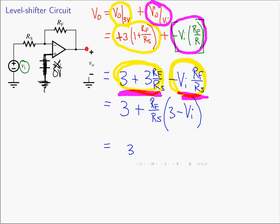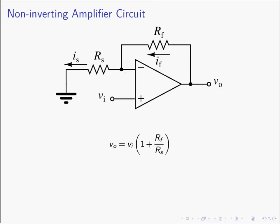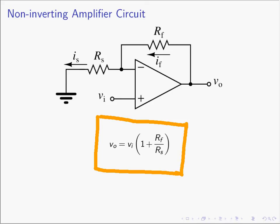So the walk-away message from this video: the non-inverting amplifier circuit has the formula Vout equals Vn times one plus RF over RS. The other key point to remember is that since the current into the op-amp is 0 amps, the input voltage Vn sees a resistance which is basically infinite — at least as big as the input resistance of the op-amp itself. As we go forward and look at op-amp circuits, you'll see that oftentimes they are combinations of the inverting amplifier and the non-inverting amplifier.